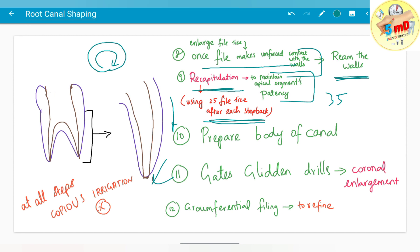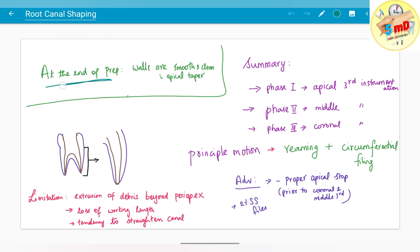The body of the canal is prepared and Gates Glidden drills are used for coronal segment enlargement. Circumferential filing is preferred to refine the walls. This smoothens and cleans the walls for a proper taper. At the end, the walls are smooth and clean with a proper taper.